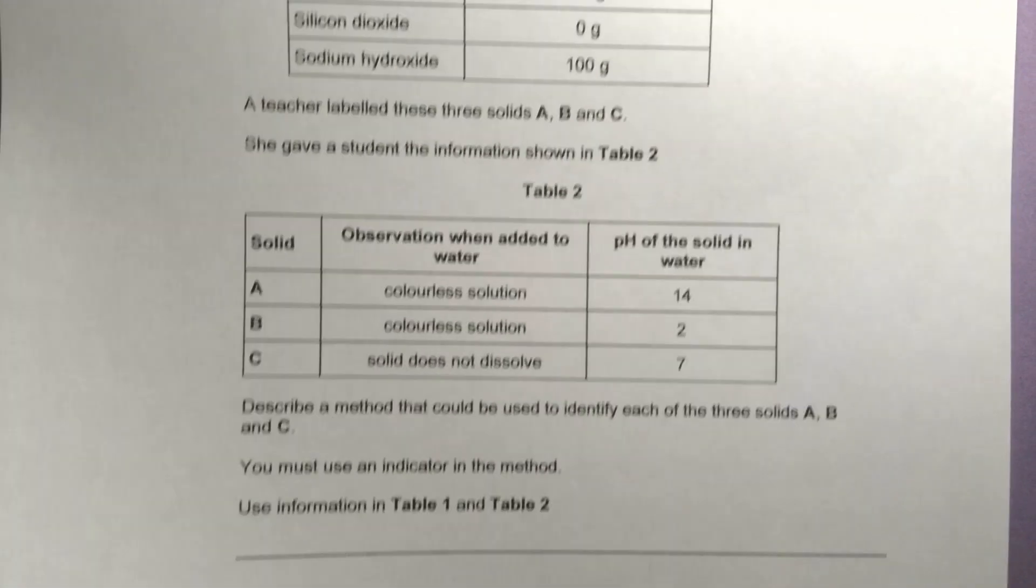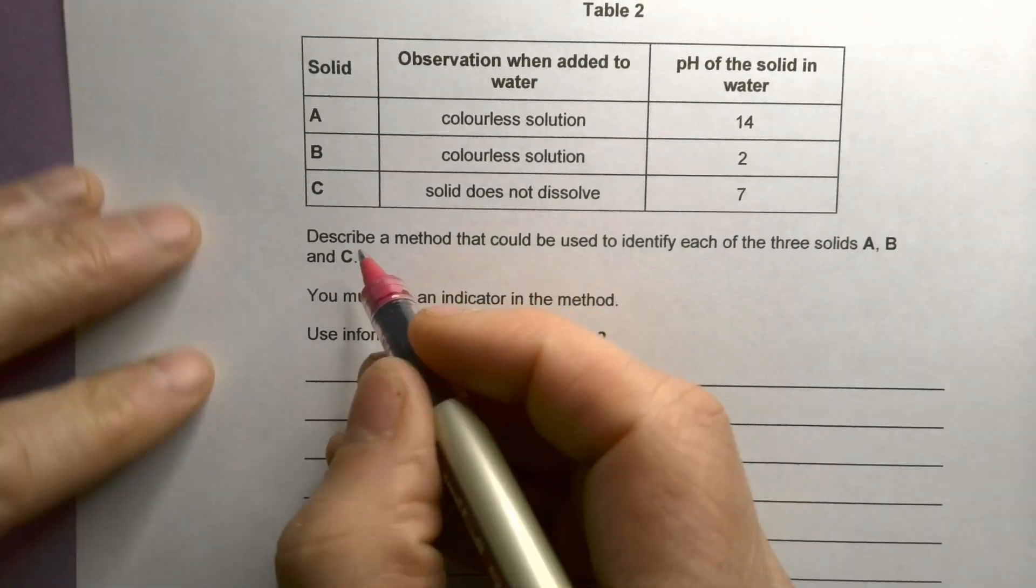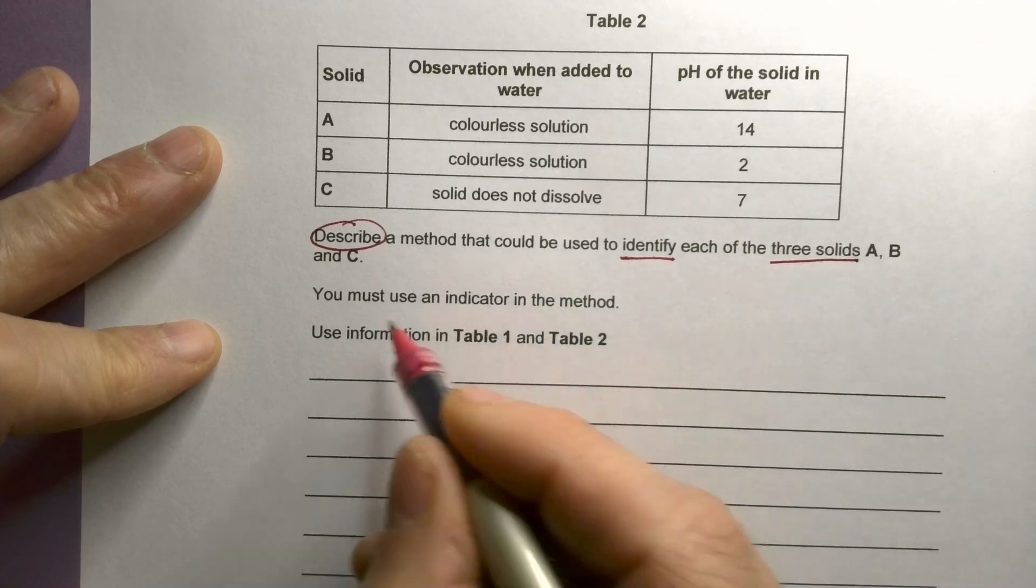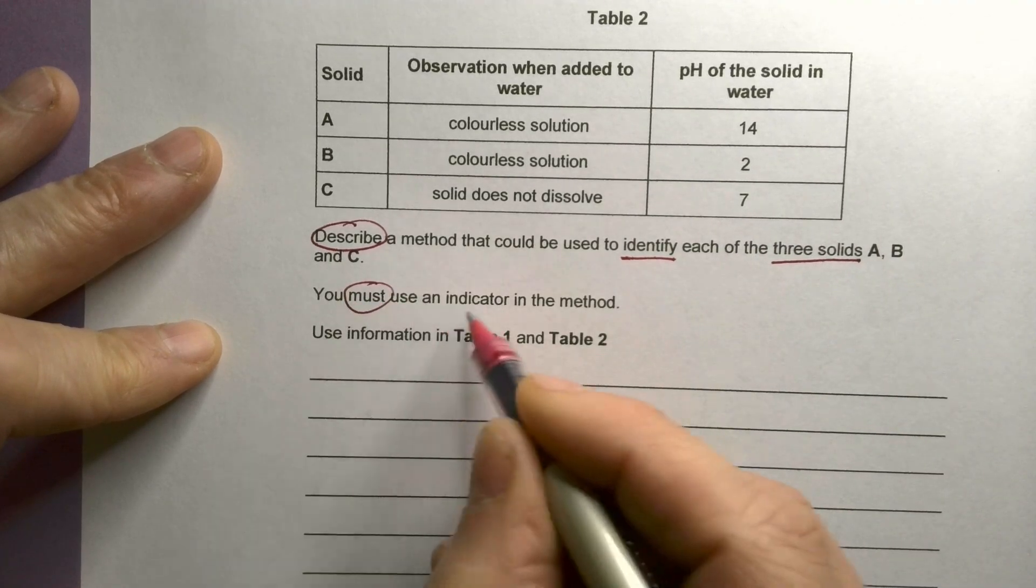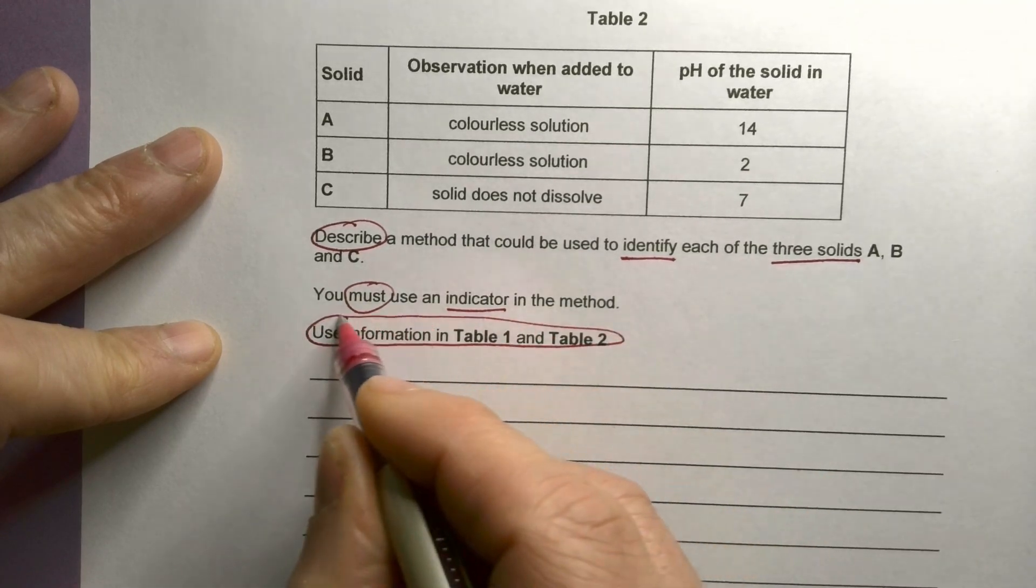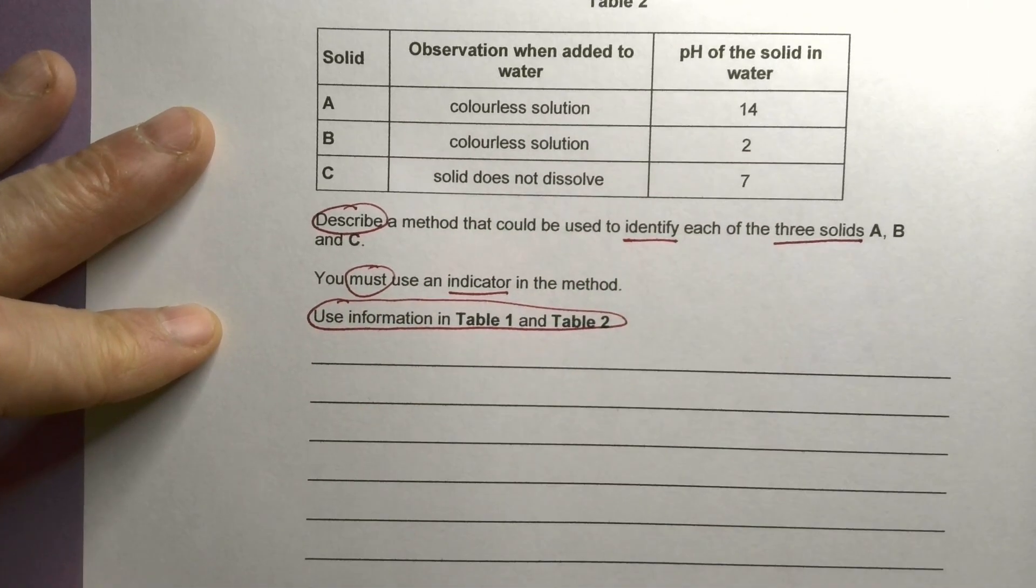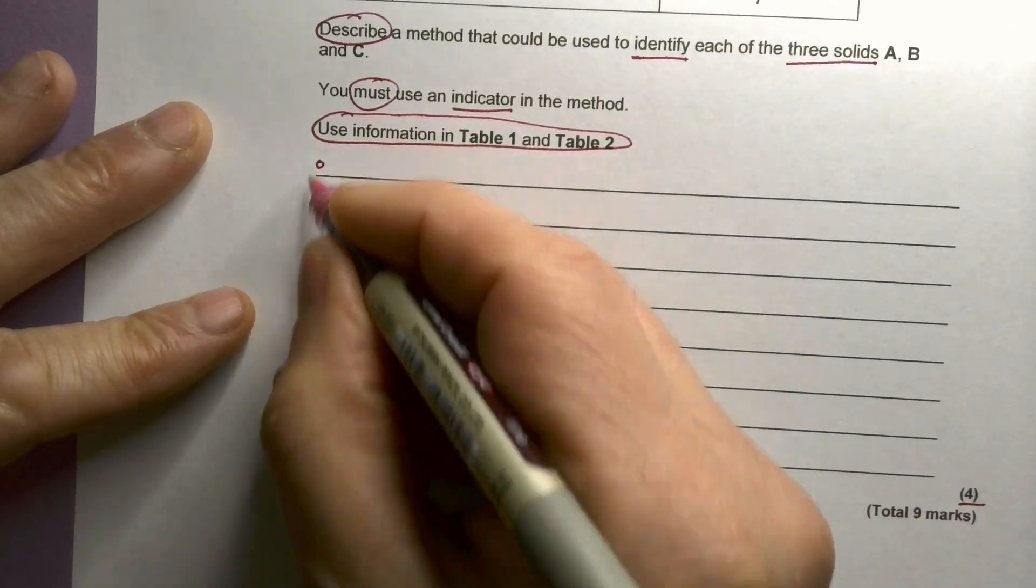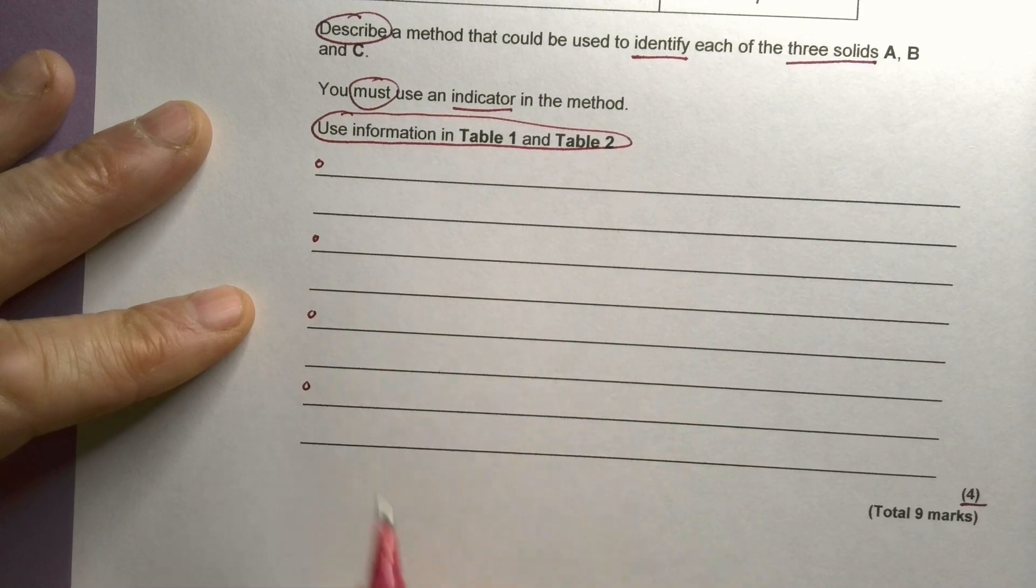You must, okay, so I've got to describe a method to identify each of the three solids. Must use an indicator. And I've got to use information in Table 1 and Table 2. And it's worth a total of four marks. So one, two, three, four different things I've got to say.